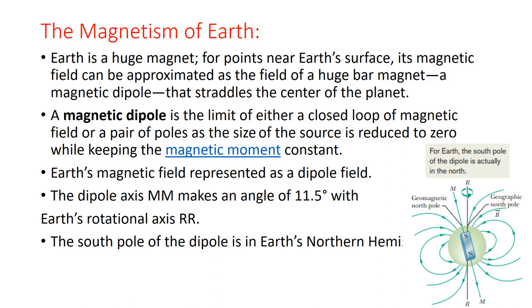The magnetic field of the Earth is represented as a dipole field — that is, the magnetic field exists in the form of circular closed loops around the Earth. This is called the dipole field, meaning magnetic dipoles are created. In other words, the magnetic field is created in the form of closed loops around the Earth. This shows that Earth is a huge magnet, because Earth has its own north and south pole.